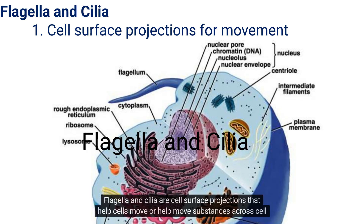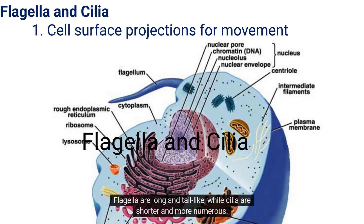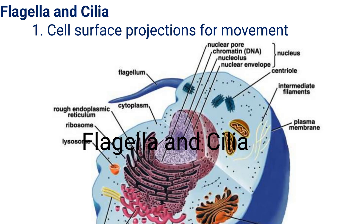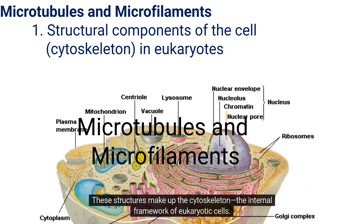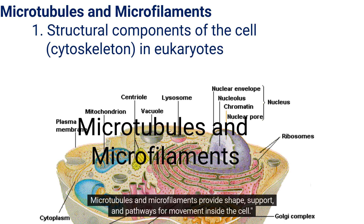Flagella and cilia are cell surface projections that help cells move or help move substances across cell surfaces. Flagella are long and tail-like, while cilia are shorter and more numerous. These structures, along with microtubules and microfilaments, make up the cytoskeleton — the internal framework of eukaryotic cells — providing shape, support, and pathways for movement inside the cell.